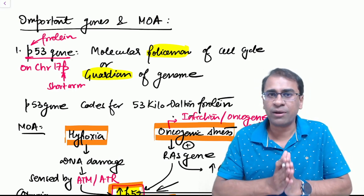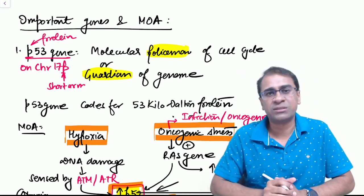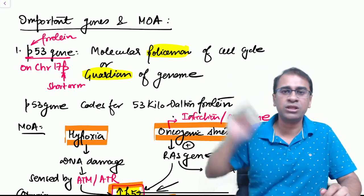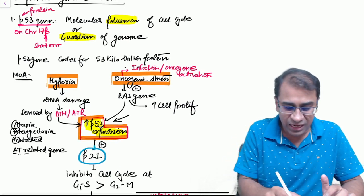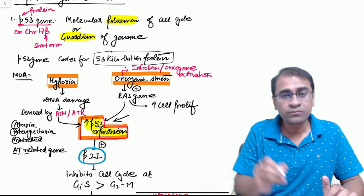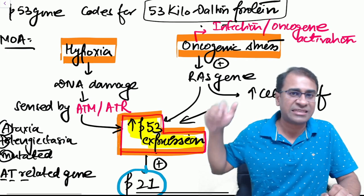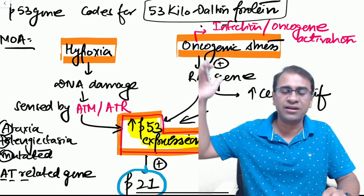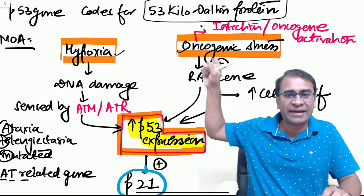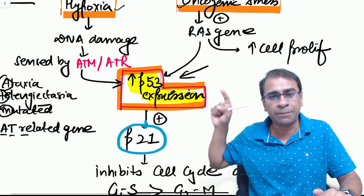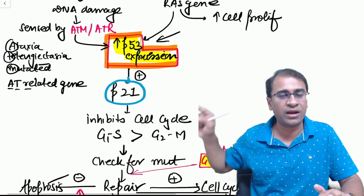A very good example of tumor suppressor gene is p53, also called the molecular policeman of the cell cycle or guardian of the genome. It's called so because it codes for 53 kilodalton protein. How does it get activated? It's like a guardian, so the guardian gets activated when there's hypoxia or any oncogenic stress. This will activate the p53 expression.